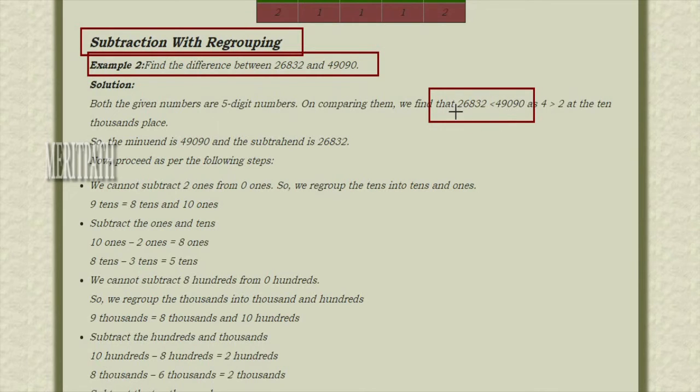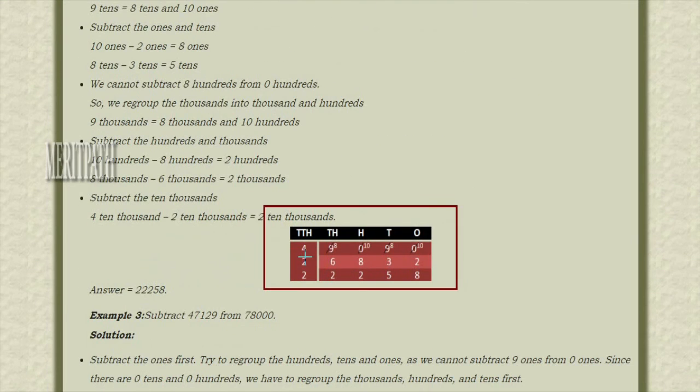In 10 thousands place, 4 is greater than 2. So from 49,090, we need to subtract 26,832. Let us insert these numbers in the place value chart.